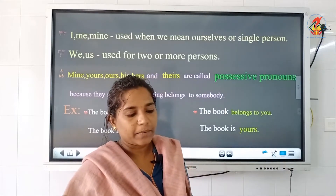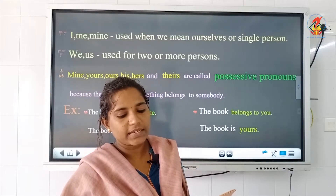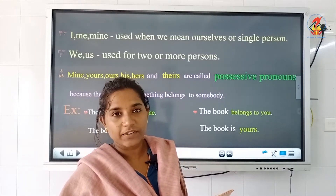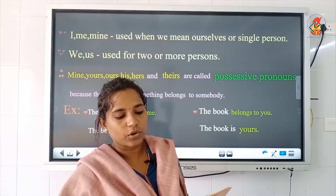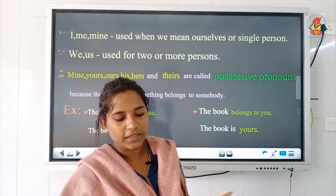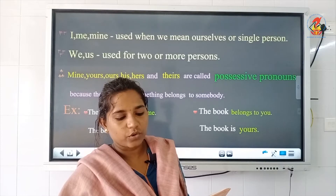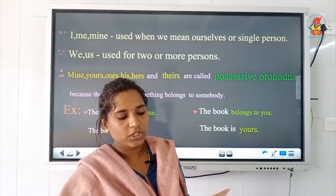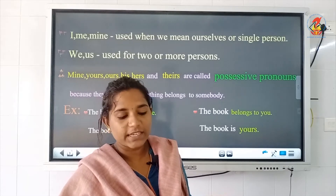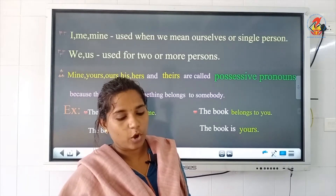Now exercise B: rewrite the following passage by replacing the underlined words with pronouns given in brackets. Tommy, the dog, wanted to grow horns like Gori, the cow. Actually, one day Tommy ran after Gori and Gori scared him by pointing her horns towards Tommy. So some words are underlined there and you have to replace them with pronouns.